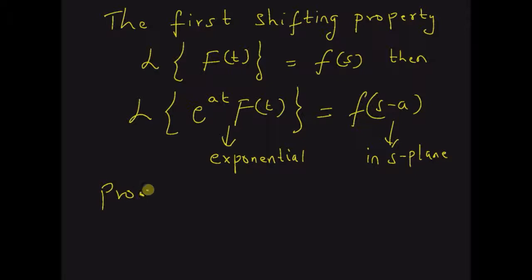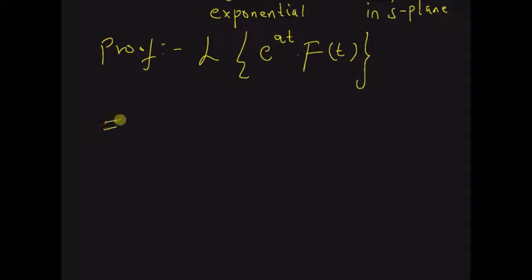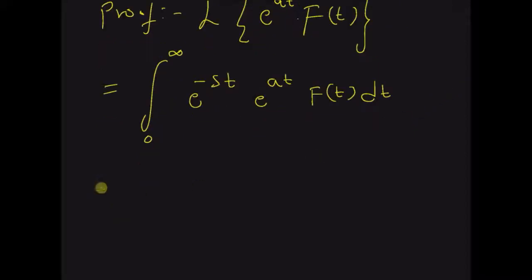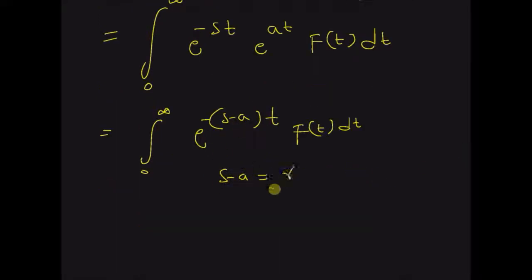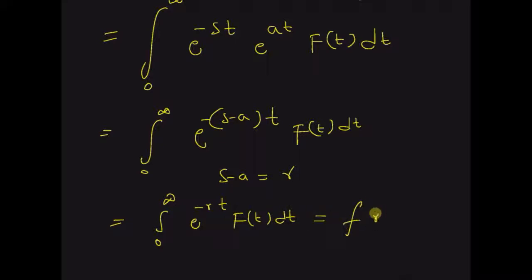So, let us look at the proof of this property. Starting with the LHS, that is the Laplace transform of the product e power at into f of t, which is equal to by definition the integral from 0 to infinity of e power minus st times e power at times f of t dt, which is equal to the integral from 0 to infinity of e power minus of s minus a into t times f of t dt. By substituting s minus a equal to r, we can rewrite the integral as the integral from 0 to infinity of e power minus rt times f of t dt, which is basically equal to F of r, and r is equal to s minus a. So, this is equal to F of s minus a.